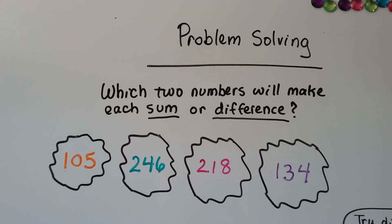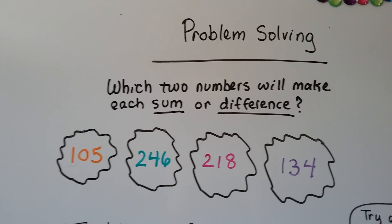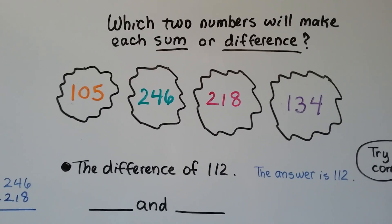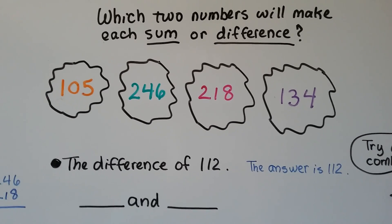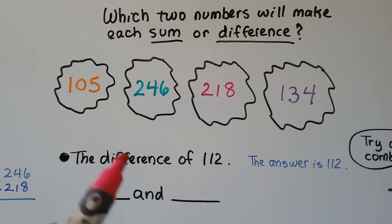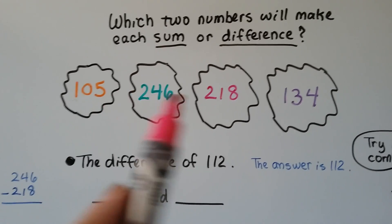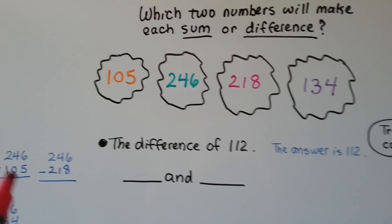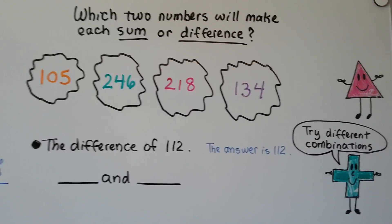Let's try some problem solving. It says: which two numbers will make each sum or difference? We have 105, 246, 218, and 134. We need to find the difference of 112. Because difference is the answer in subtraction, that means the answer is 112, and it's going to be a subtraction problem. We need to find which two of these numbers are going to equal 112 when you subtract one from the other — the only way to do it is to try different combinations.